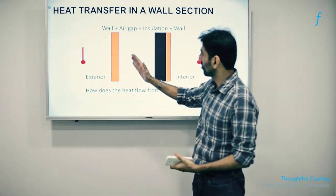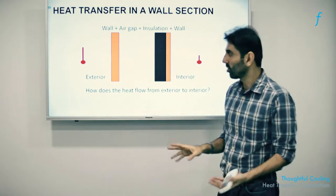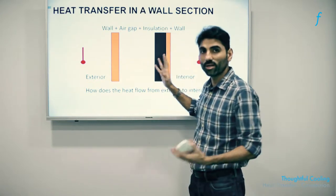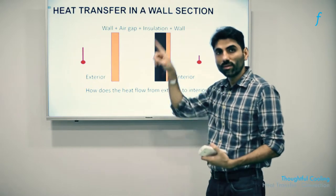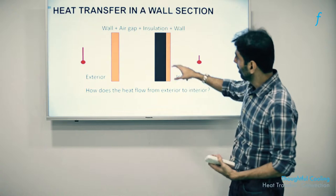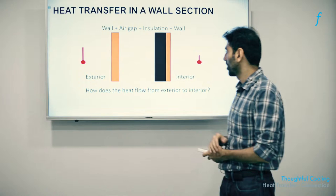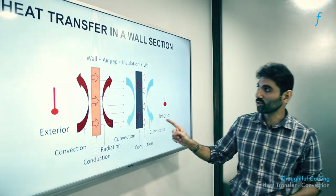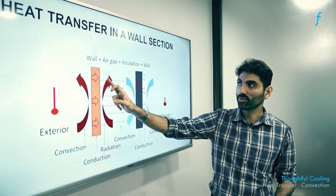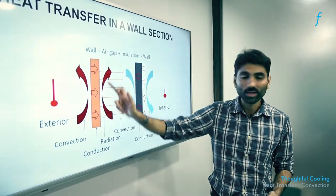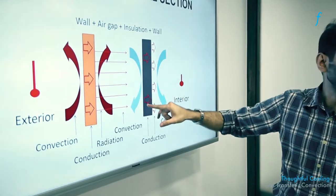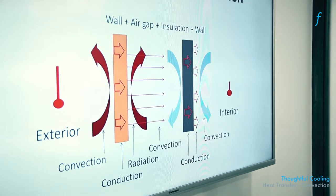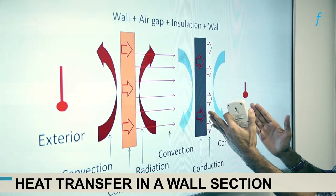Let's take the learnings of the previous example and apply them to a wall with an air gap, but now with an insulating layer on the inner side to impede the process of heat transfer even more. As the previous illustration showed, while air does provide resistance to heat transfer, because of the convection currents some heat does make its way through. As before, the radiant heat from the Sun makes its way through by conduction. Once it reaches the inner surface of the outer wall, a convection current is set up, and that heat then makes its way into the inner wall through conduction.